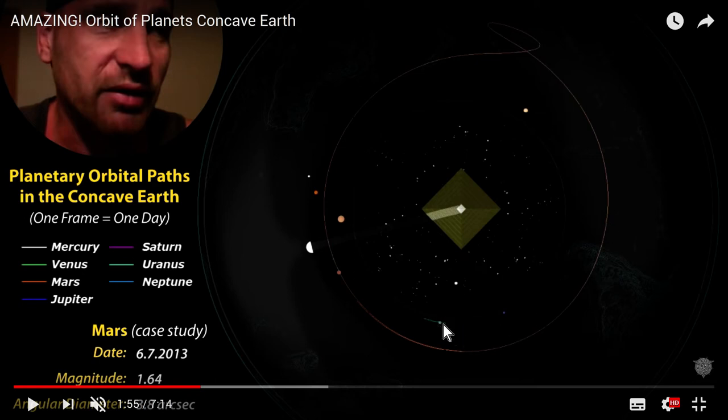I wonder how he can explain the 84 years for Uranus and the 164 years for Neptune to take a complete turn around the Sun as the astronomers measured.